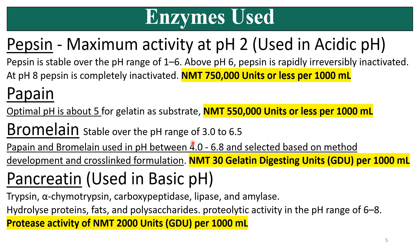Similarly, bromelain is used in the pH range of 3 to 6.5. Pepsin and bromelain are included recently and are used in the pH between 4 to 6.8; these are selected based on method development, with not more than 30 gelatin digesting units (GDU) per liter. Pancreatin is used in basic pH with a protease activity of not more than 2000 units per 1000 ml (per liter).